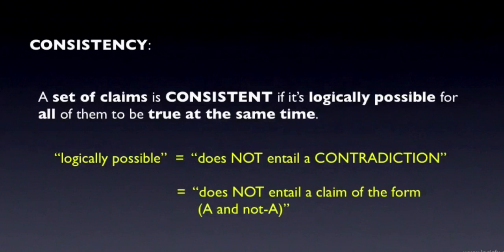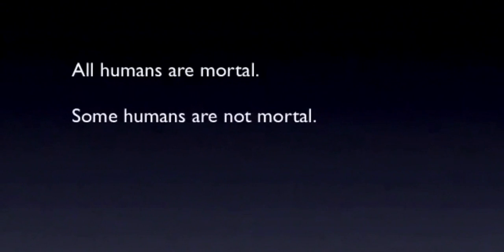So, if it's logically impossible for a set of claims to be true at the same time, then we say that the set is logically inconsistent. Let's look at some examples. All humans are mortal, and some humans are not mortal. These clearly form an inconsistent set, since these are logical contradictories of each other. Mortal means you will someday die. Not mortal means you'll never die - you're immortal. If one is true, the other must be false, and vice versa.